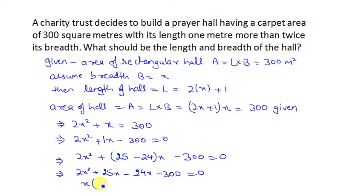Here I will take x common, so this is x times 2x plus 25. Here I take 12 common, so this is minus 12 times 2x plus 25 equals 0.